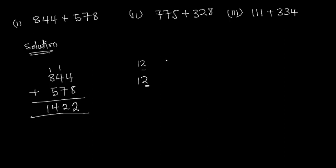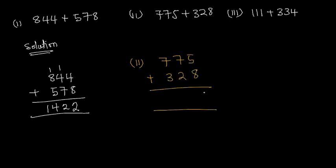For exercise II, we have 775 plus 328. Adding 5 and 8: 5 plus 8 gives 13 — write 3, carry 1. Then 1 plus 7 is 8, plus 2 gives 10 — write 0, carry 1. Now 1 plus 7 is 8, plus 3 gives 11.